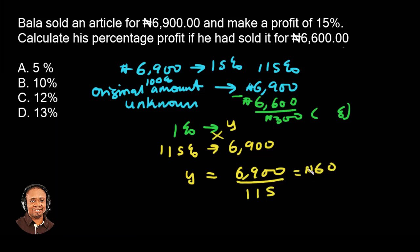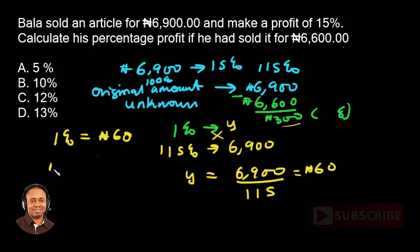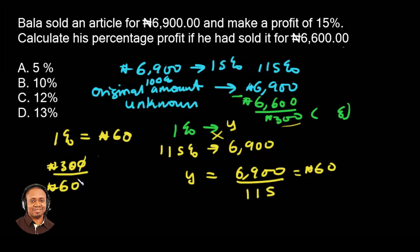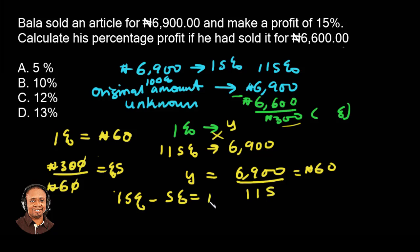So 1% gives us 60 Naira, and the difference in the amount is 300 Naira. 300 Naira divided by 60 Naira gives us 5%. So if 300 Naira gives us 5%, that means it has dropped from the 15%. If we remove that 5% from 15%, we have 10%. So 10% is the percentage profit if he had sold for 6600 Naira, and answer option B is the correct answer.